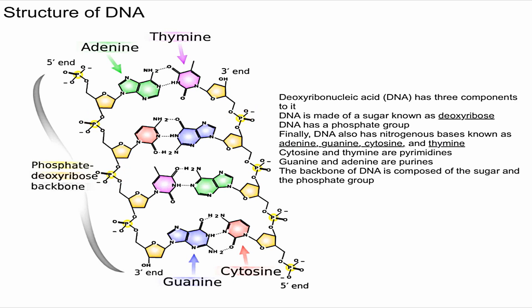The last component of DNA are nitrogenous bases, and there are four of them. DNA has adenine here in green, thymine in purple, guanine also in purple but darker, and cytosine in red. Adenine is going to pair up with thymine, and guanine is going to pair up with cytosine — and that's always the case in DNA.